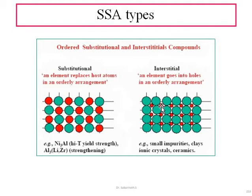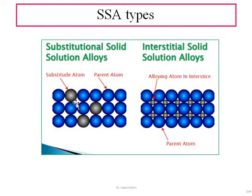In the interstitial type, the interstitial atoms will obviously increase the density of the alloy — this can be easily identified by higher density. It will also induce compressive stresses, which will obviously increase the strength. This type is also seen in some ceramics and ionic crystals. For interstitial substitution to occur, the allowing atom must be of very small size — approximately the size of the interstitial spaces between atoms.